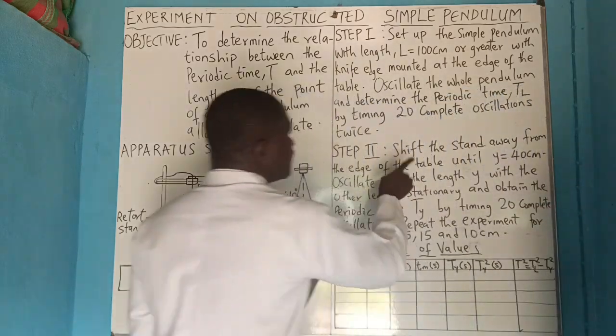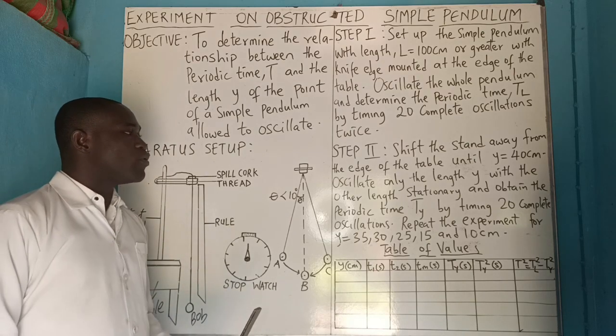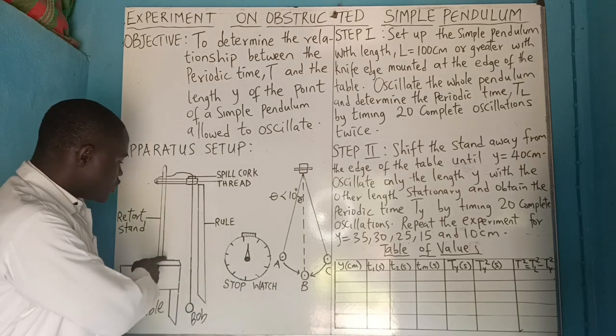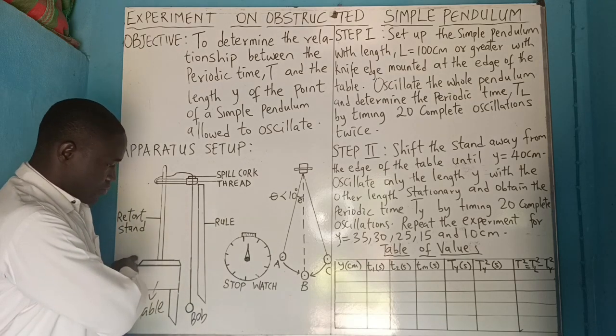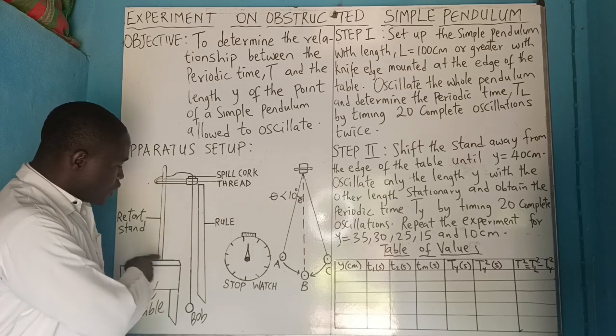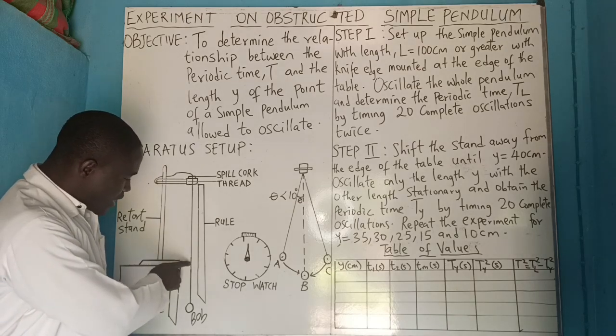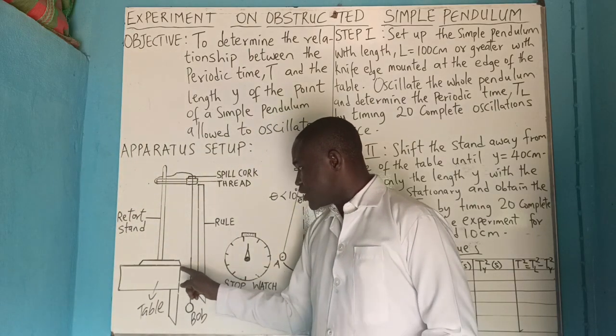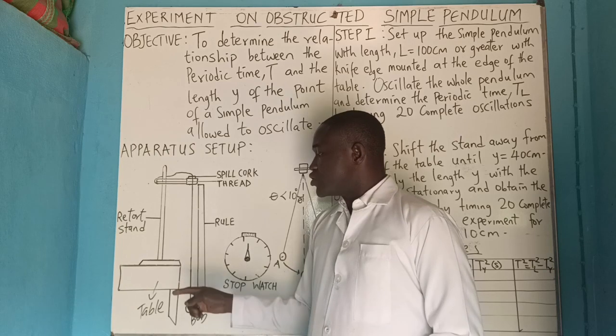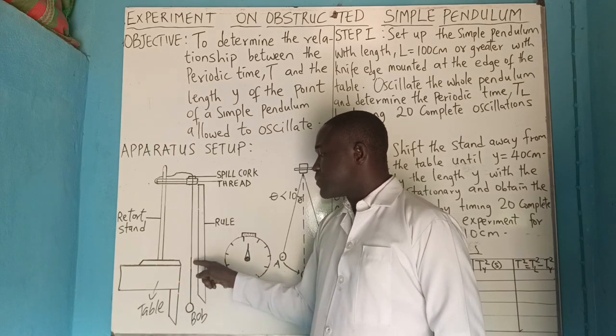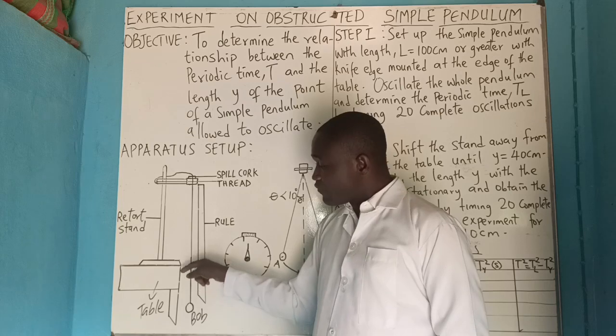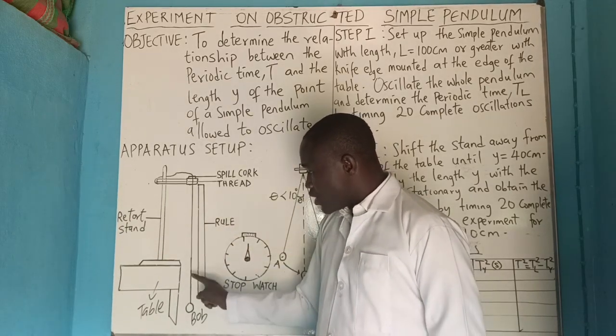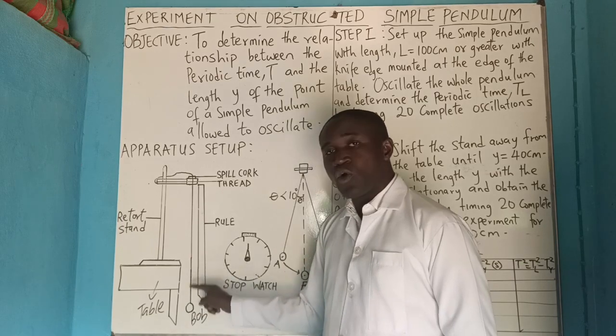Afterwards, shift the stand away from the edge of the table until y equals 40 cm. You have to shift this stand away. When you shift this stand away, it will get to a point that this thread will be touching this table. So what you will now do is hold it at that point and make sure that only from here to here is now oscillating.